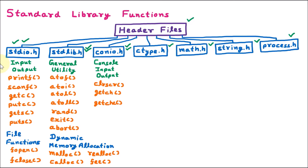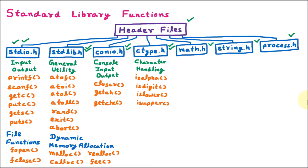The next header file is ctype.h, used for handling characters. It has various functions: isalpha checks whether a character is an alphabet or not; isdigit checks whether the given character is a digit or not; islower checks whether a character is in lowercase or not; isupper checks whether the given character is in uppercase or not; tolower converts the given character to lowercase; and toupper converts the given character to uppercase.